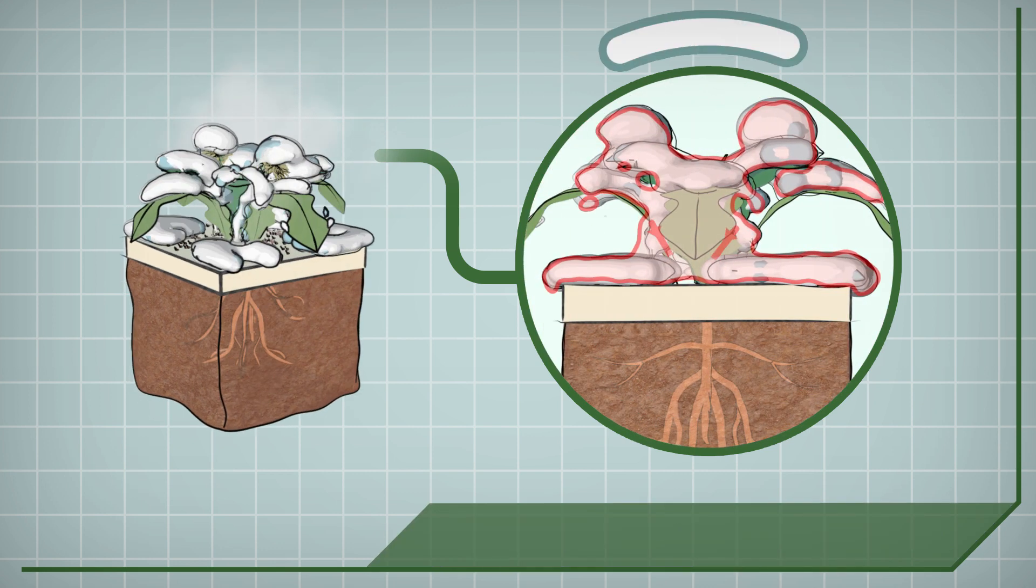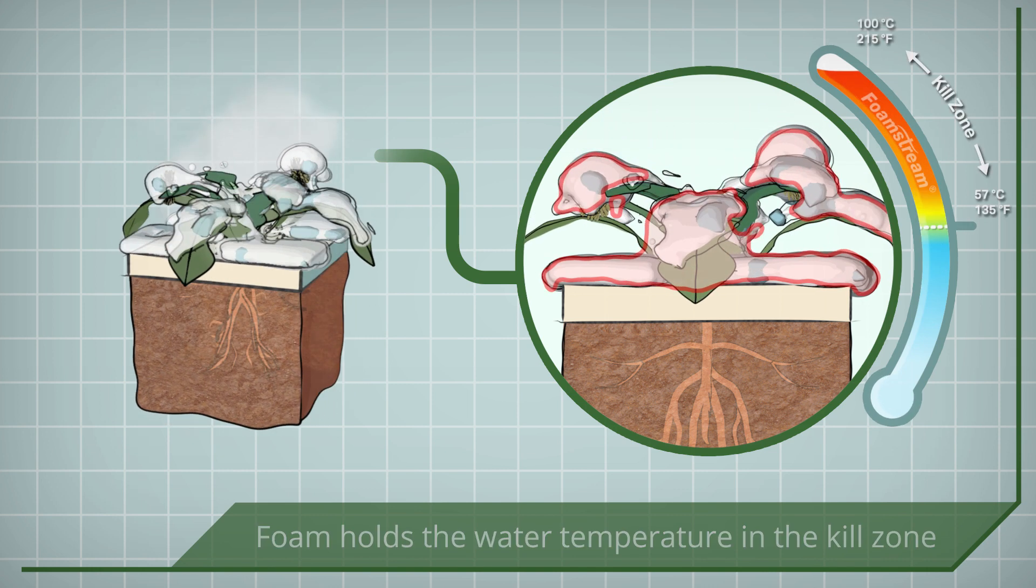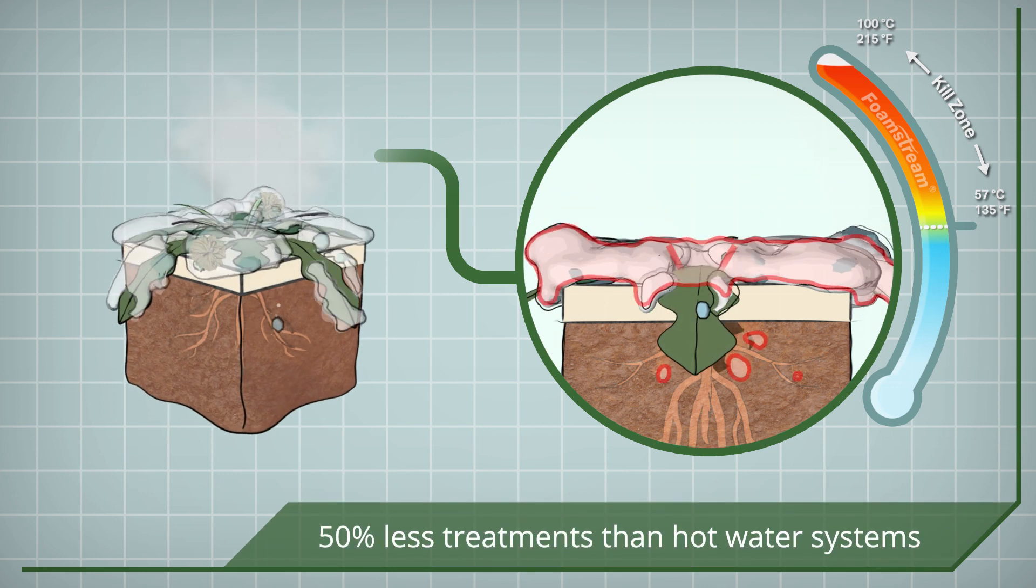The Foam Stream blanket ensures the temperature in the hot water is retained above the 57 degree kill zone for an extended period of time. Without it, the heat is simply lost to the atmosphere.